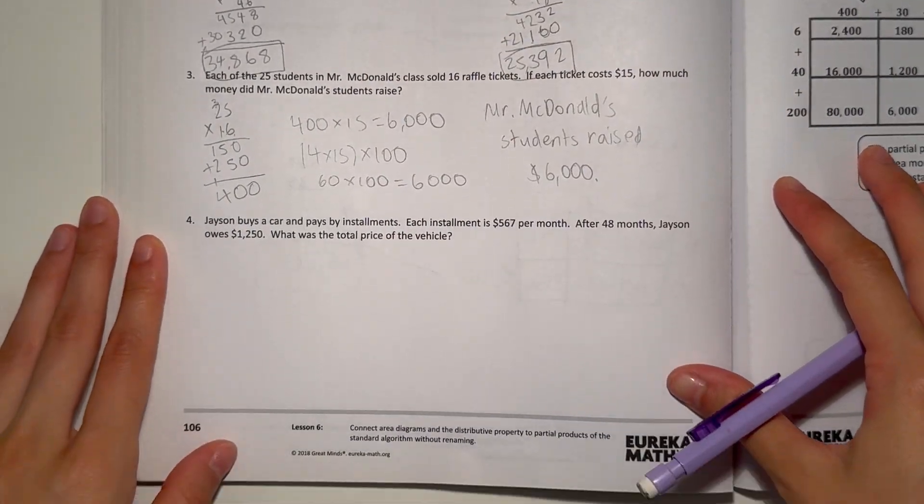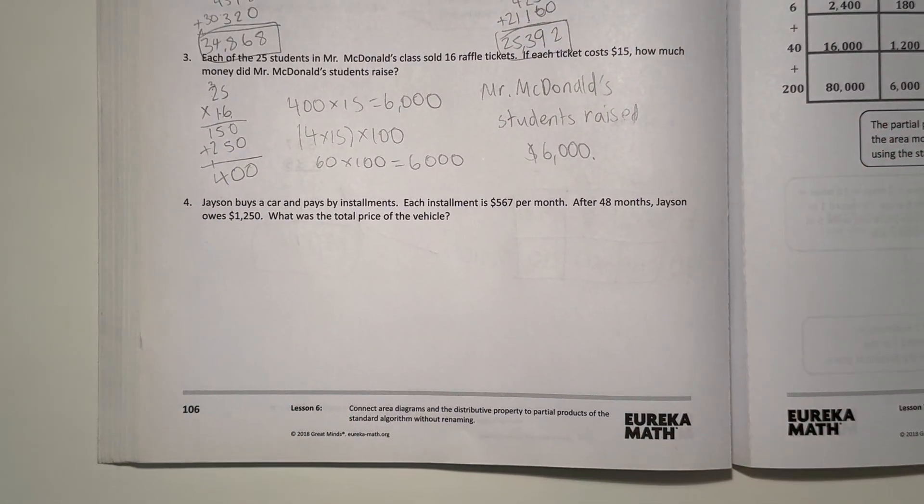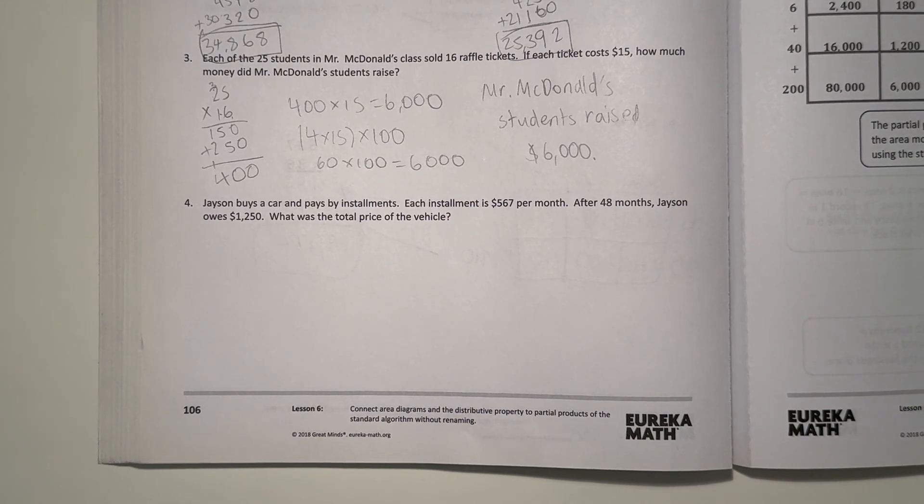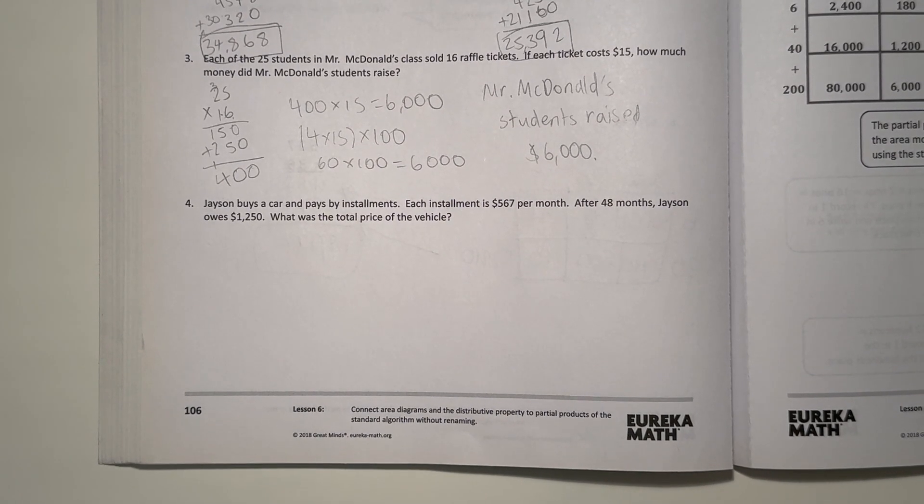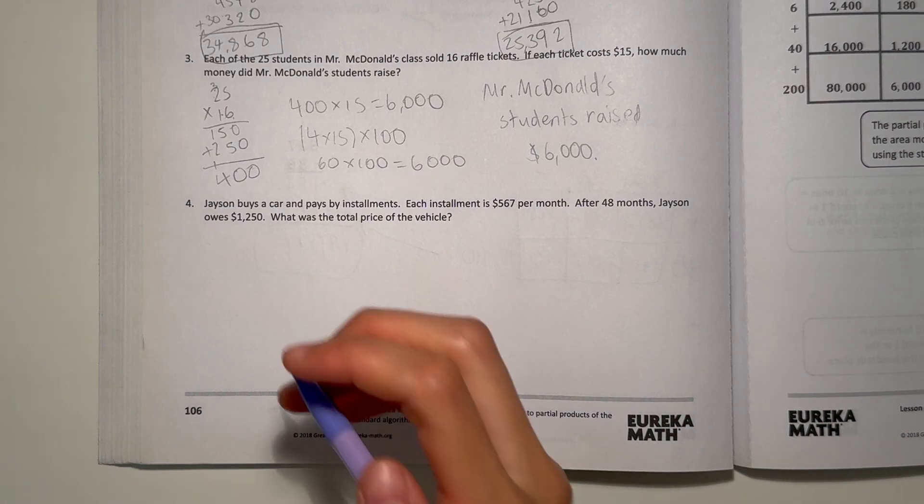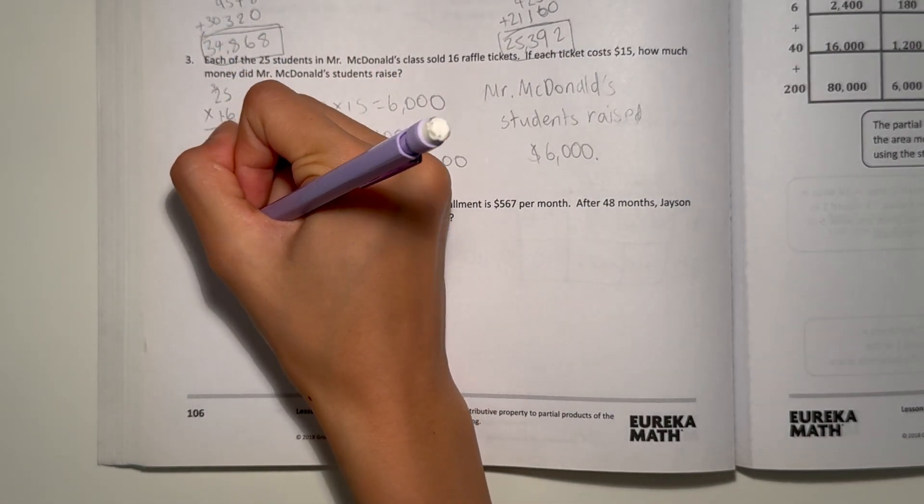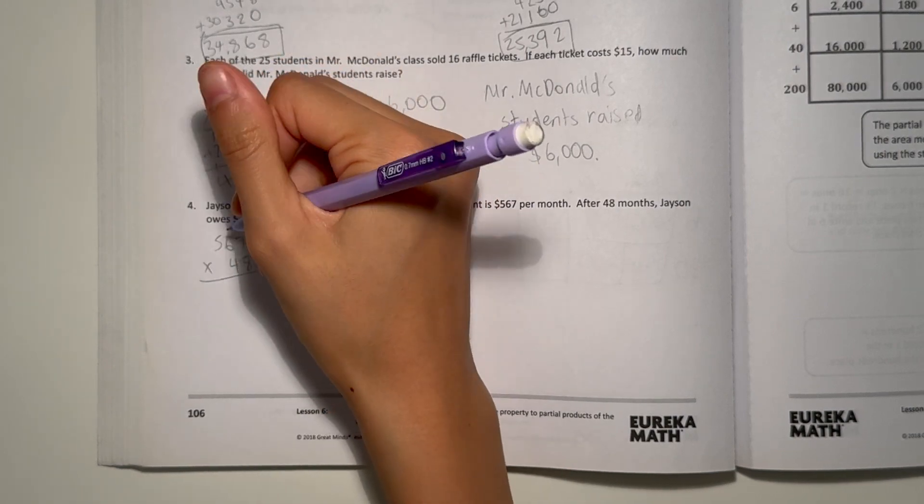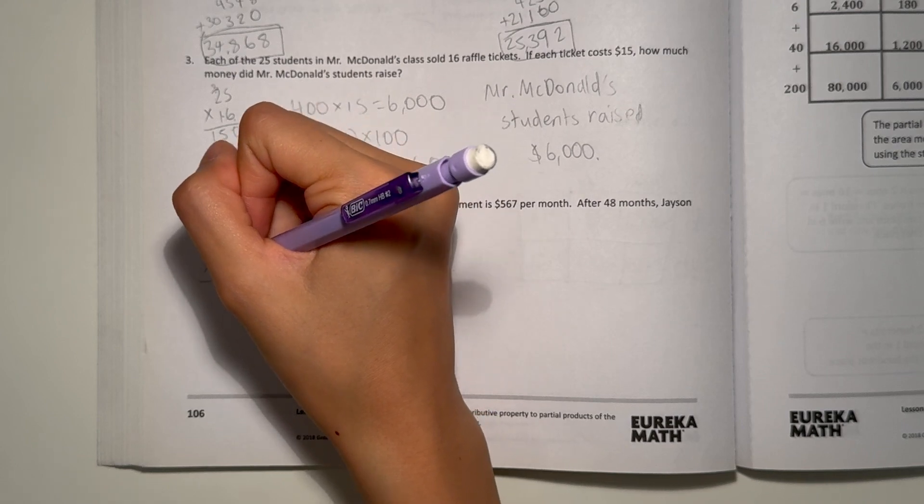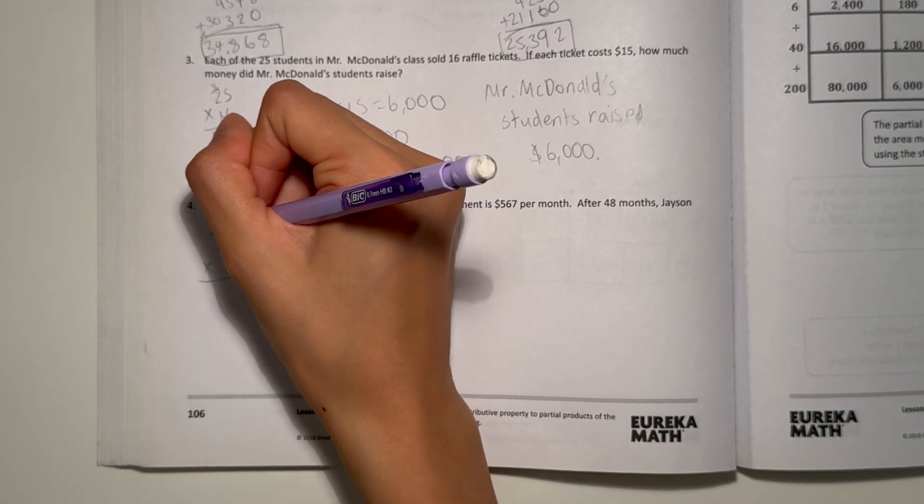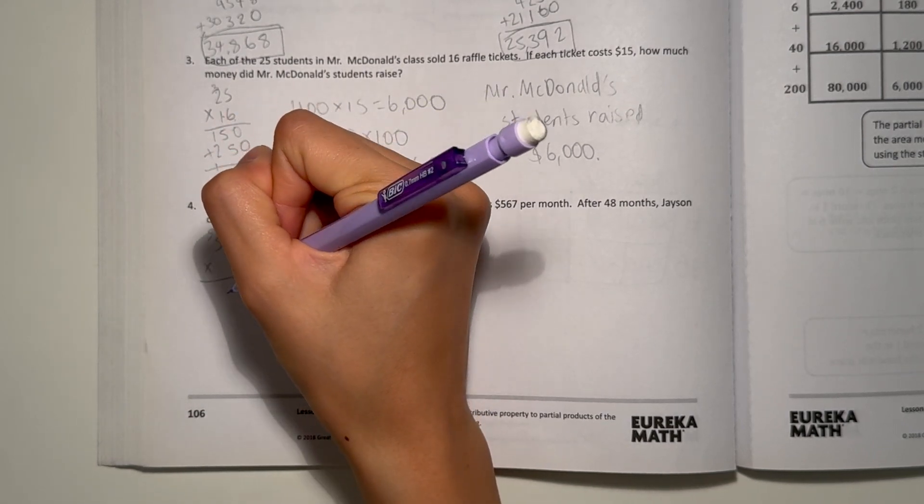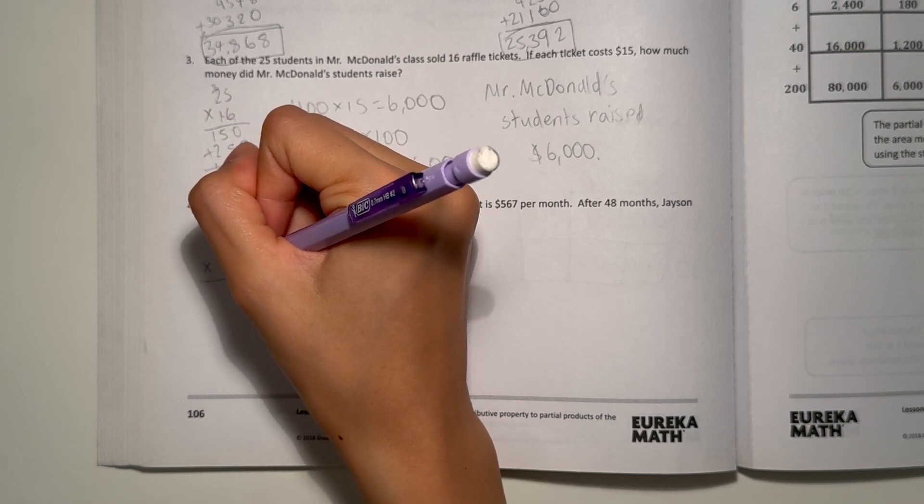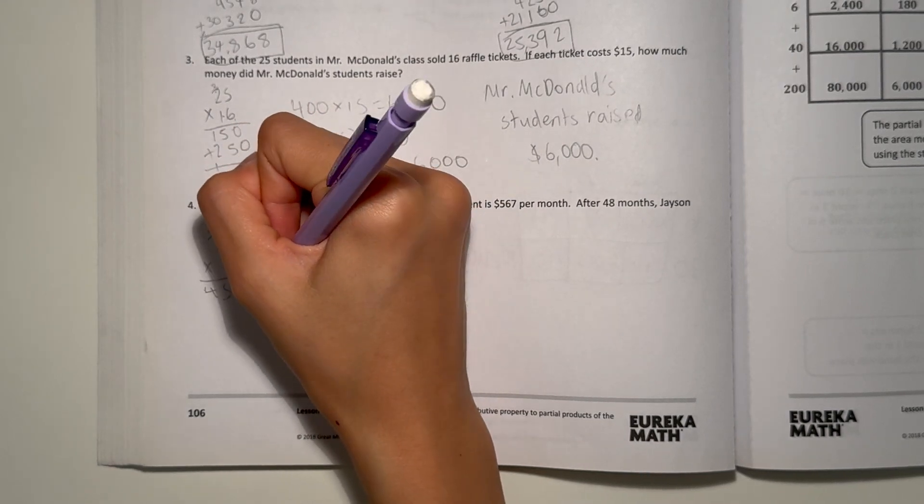Alright, number 4. Jason buys a car and pays by installments. Each installment is $567 per month. After 48 months, Jason owes $1,250. What was the total price of the vehicle? 567 times 48. 7 times 8 is 56. 6 times 8 is 48. Plus 5 is 53. 5 times 8 is 40. Plus 5 is 45. Add a 0.